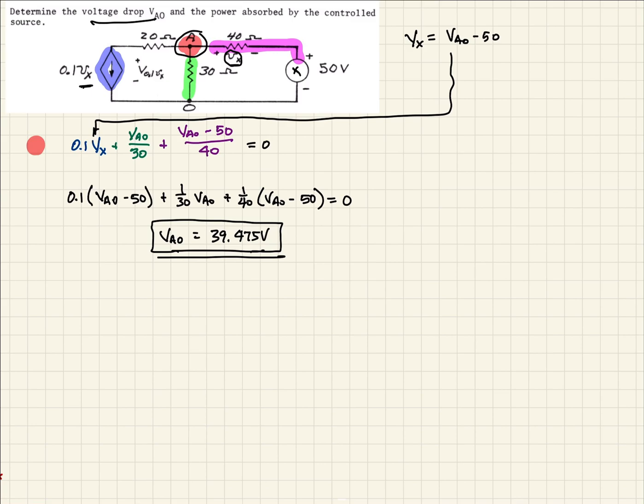So now the second part of what they've asked for is what is the power absorbed by our controlled source. So that's this guy right here. So to do that, remember, we recall that P is equal to V times I. So we need to determine both of those for our current source.